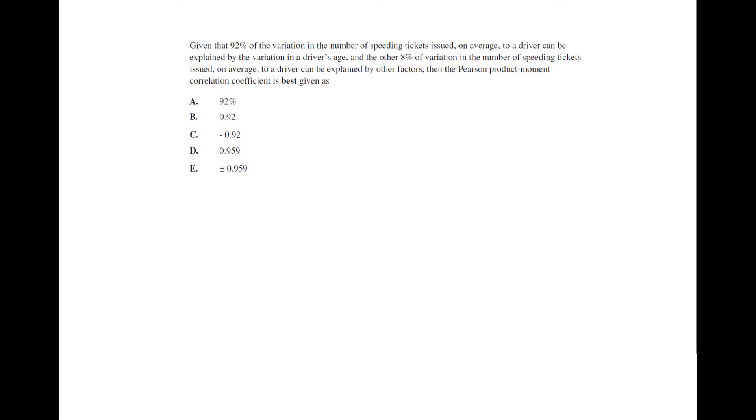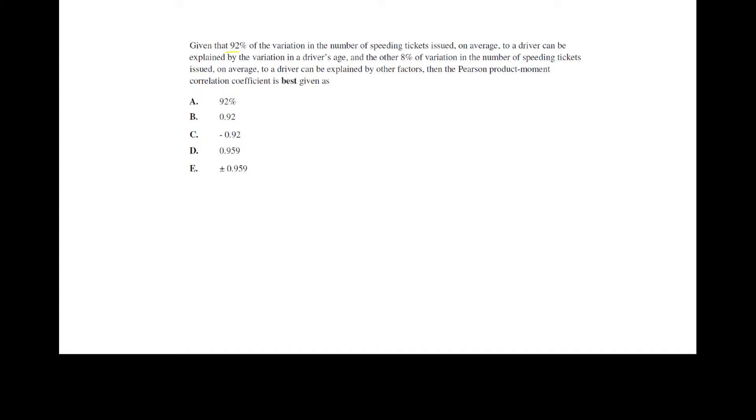The first question here. Given that 92% of the variation in the number of speeding tickets issued on average to a driver can be explained by the variation in a driver's age, and the other 8% in variation of speeding tickets issued on average to a driver can be explained by other factors, and the Pearson's product moment correlation coefficient is best given as. So a couple of things here. When we're talking about 92% of the variation, that means that we are talking about the R squared value, whereas here they are asking for the Pearson's product moment correlation, so that means they are asking for R. So the first thing we need to do is obviously find our R value.